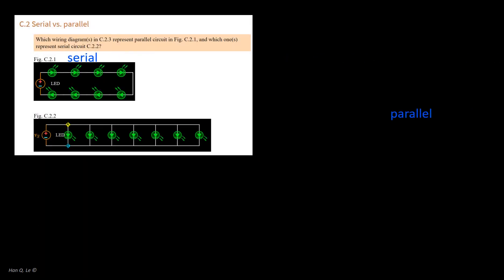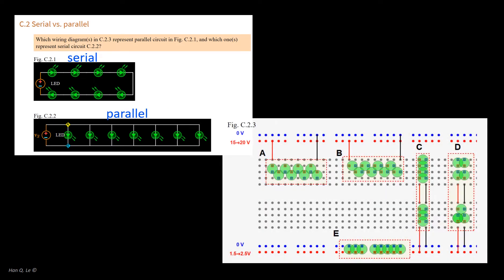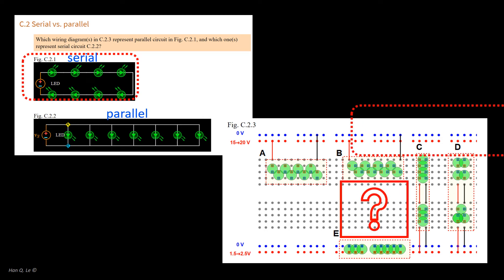Consider a number of LEDs in a serial or parallel circuit. Which wiring diagrams on the breadboard are functional serial circuits, like the schematic of figure C21, and which ones are functional parallel as in schematic C22? Which ones will not work? Use your knowledge of breadboard and LED from previous sections.